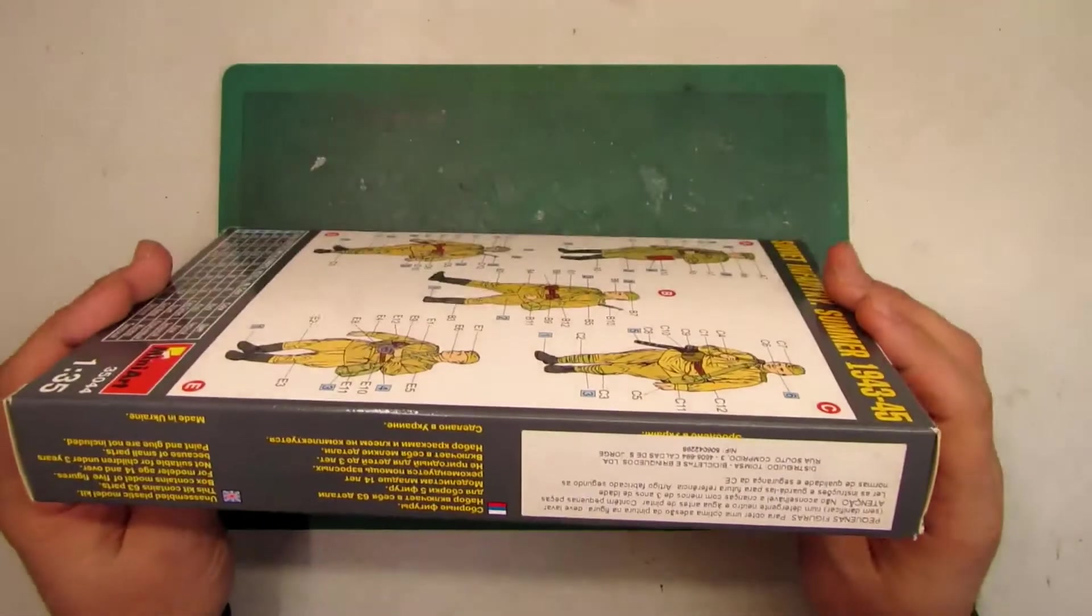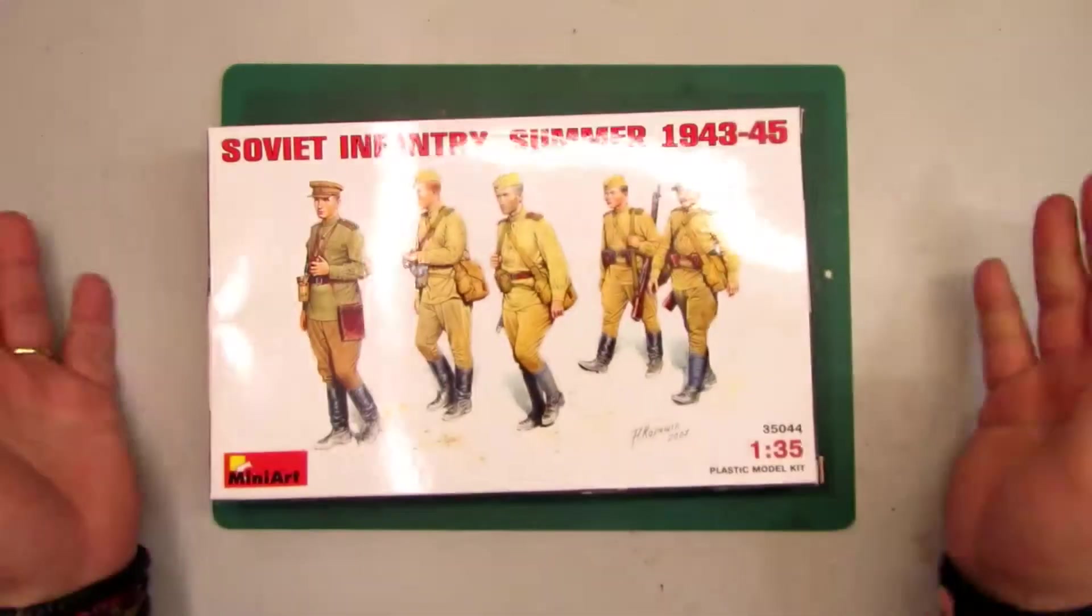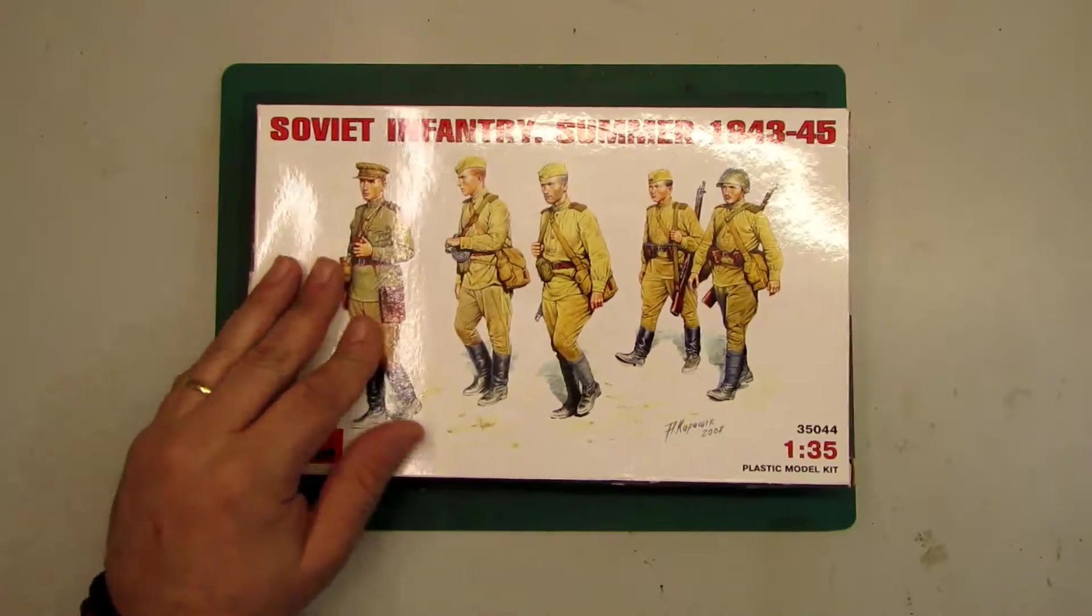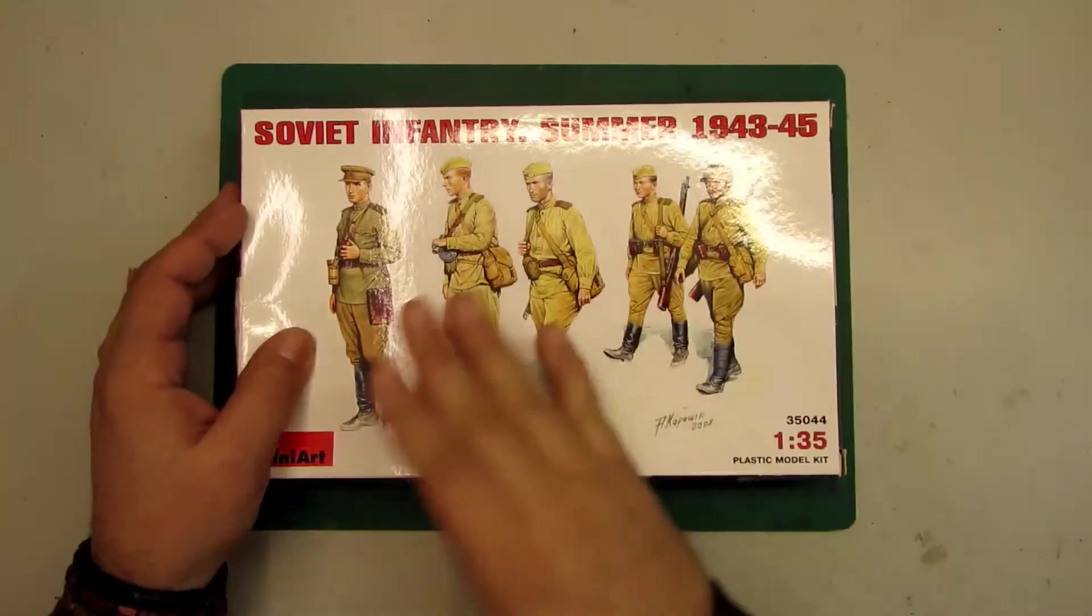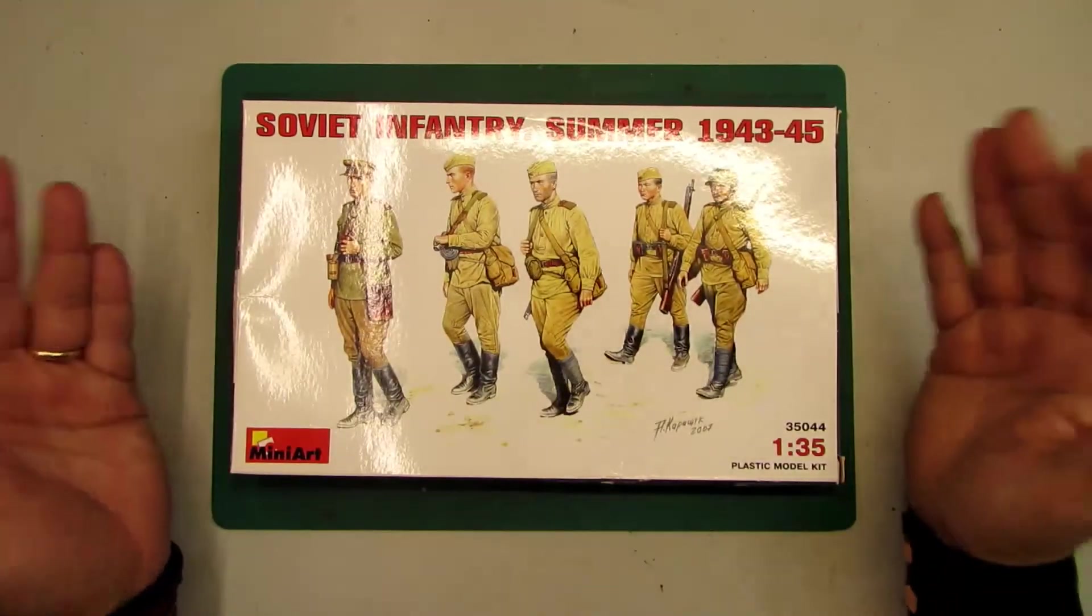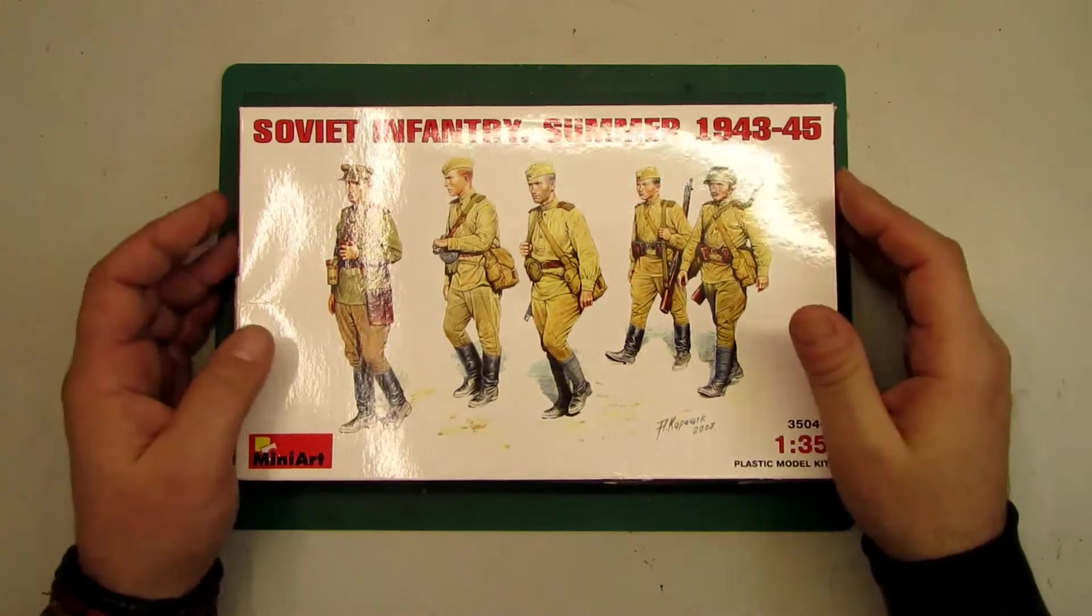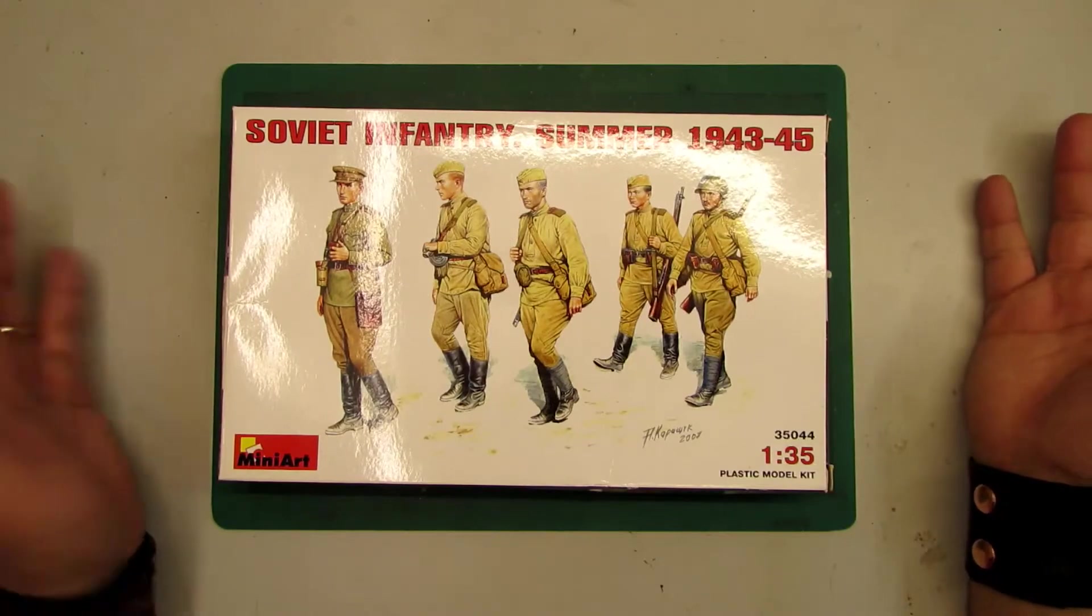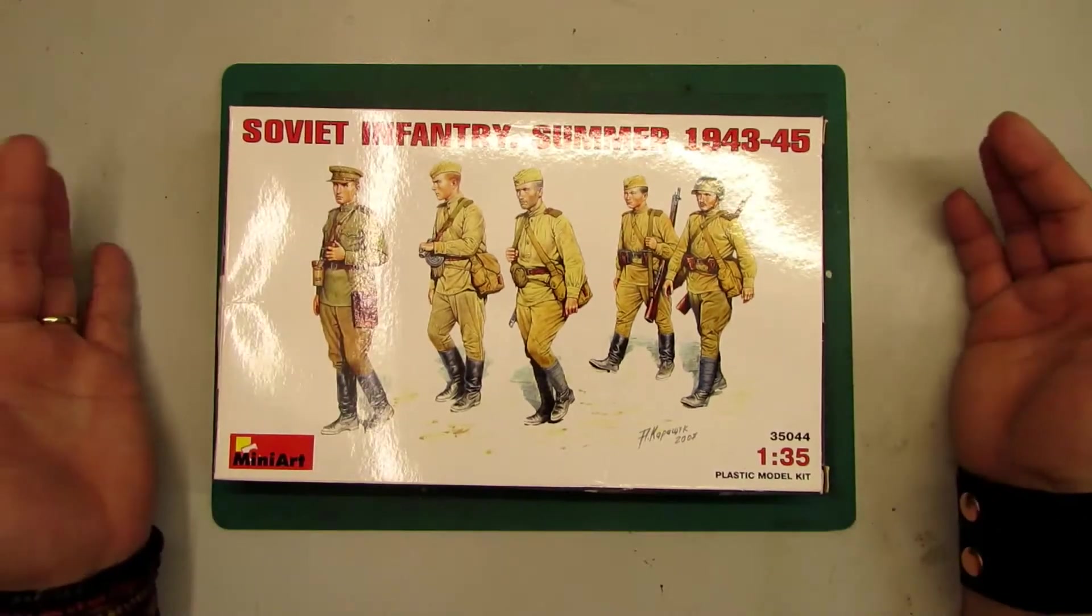You can see this is the Soviet Infantry Summer 1943-45. It's a good set to put on your dioramas or in your tanks. This brings five figures: one commander and four troops.